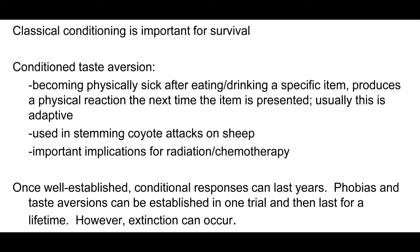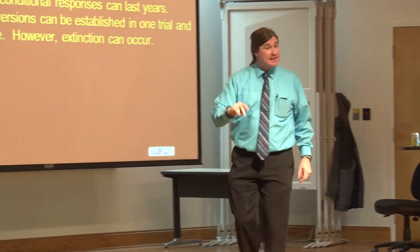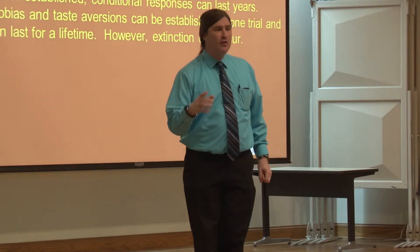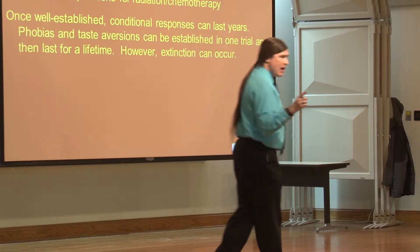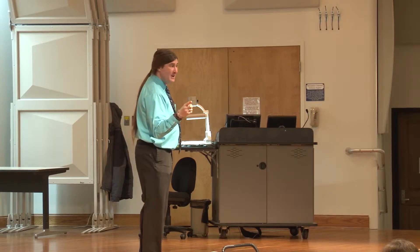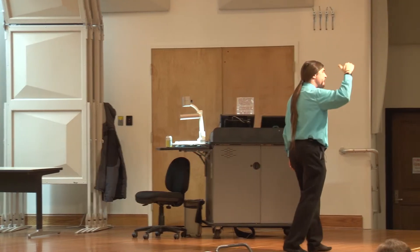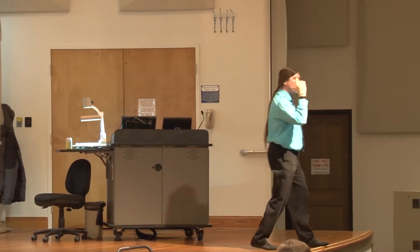This is important for survival — going back to the functionalist William James. Pain, fear, and sickness can establish aversions in one trial. To get a dog to slobber to a bell you'd have to repeat it over and over through an acquisition phase. But pain, fear, and sickness only require one trial.